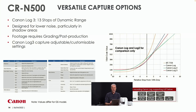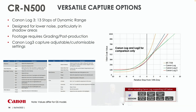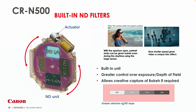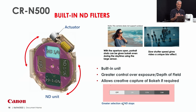On the CR-N500 you can find deep menus with custom picture settings — color matrix, gamma curve with knee slope, and different color gamuts, exactly the same as in the professional camcorders. The CR-N500 also features built-in ND filters — two, four, and six stops — which is great for shooting in bright environments when you want shallow depth of field. And that's fully controllable remotely.